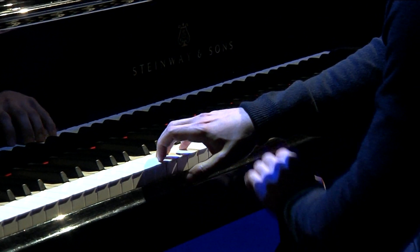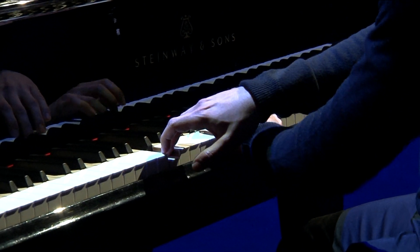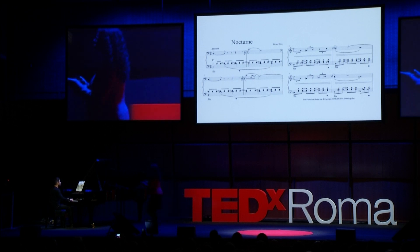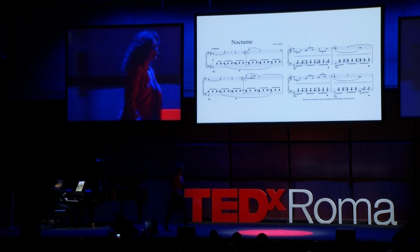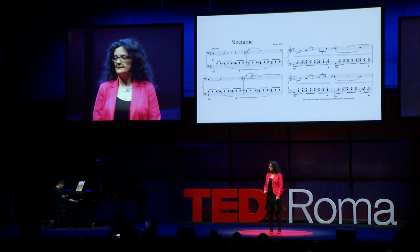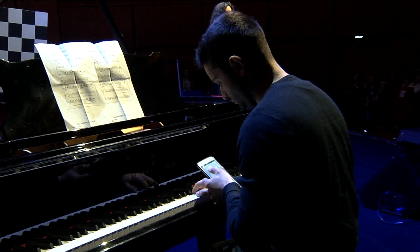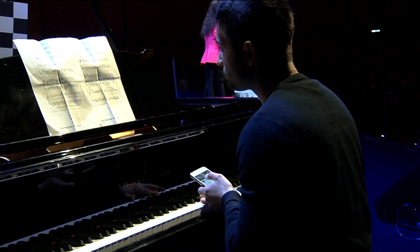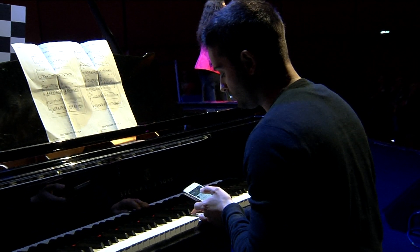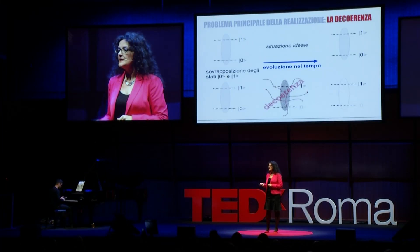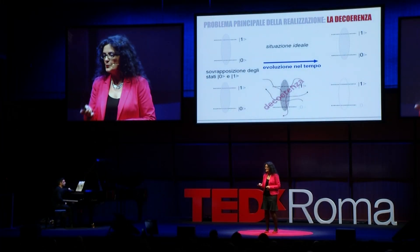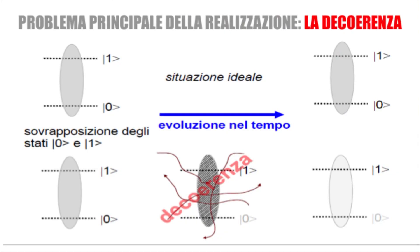But if something disturbs the pianist — for example, he looks at his phone — what happens? He loses coherence. The qubit disappears, the system no longer works. Decoherence destroys the qubit, therefore the entangled state and the quantum superposition state that we wanted to exploit — it is no longer there. It has disappeared, it has gone away.